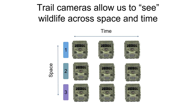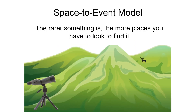Scientists have developed a number of new ways to use data from trail camera pictures to estimate animal abundance. The method we've utilized in Idaho in recent years to estimate the state's wolf population is called space-to-event. The space-to-event model is a new method of estimating abundance of unmarked animals, and it works on the idea that the rarer something is, the more space you'll have to survey before you find it.